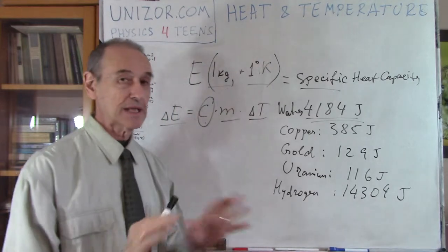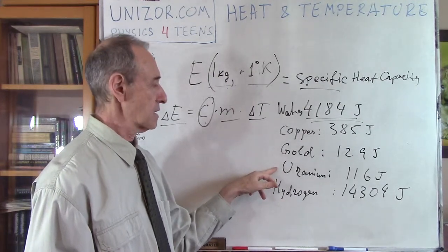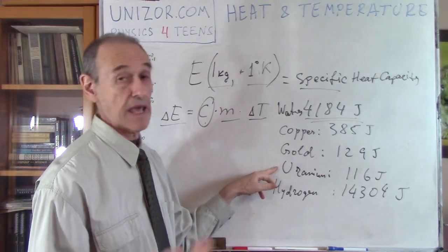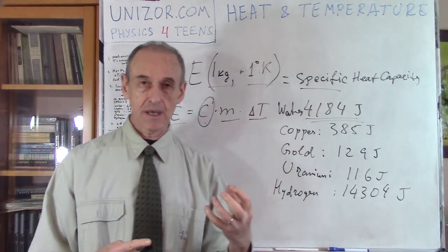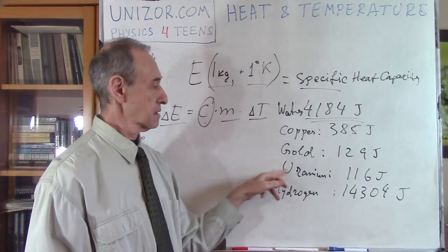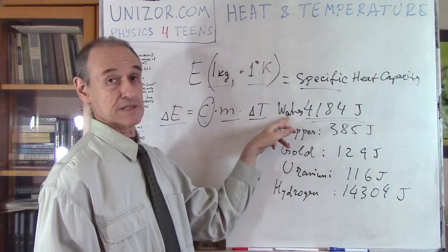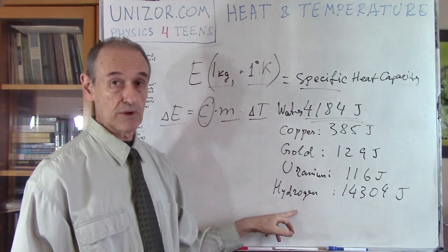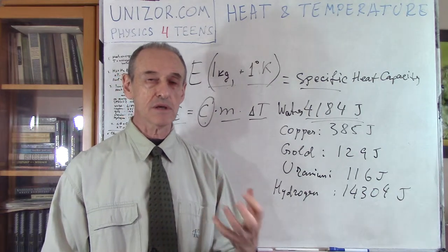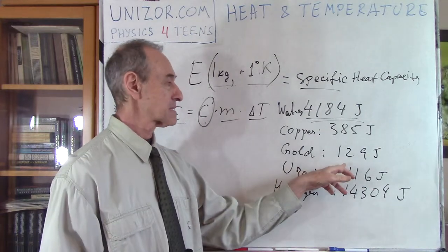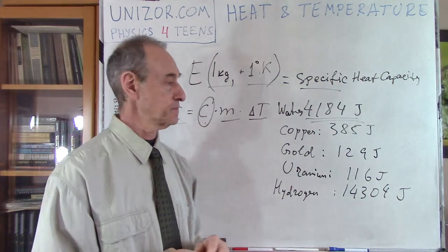As you can see, there is some kind of dependency. This is a fluid, this is a gas, and these are all solids. Uranium is much heavier than gold; gold is heavier than copper. So it looks like the more dense the matter is, the less energy it requires to increase its temperature by a certain number of degrees. The denser the material, the less energy it requires.